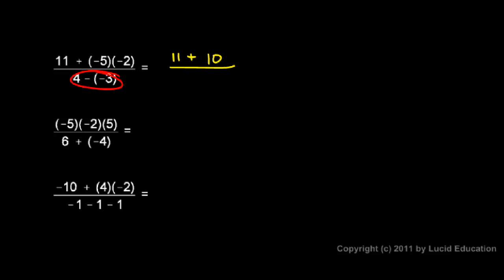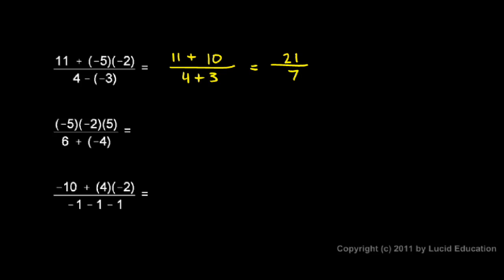In the denominator, 4 minus negative 3 is the same as 4 plus 3. Each step results in a simpler problem than the one before it. Now the numerator is 11 plus 10, which is 21, and the denominator is 4 plus 3, which is 7. So we have 21 divided by 7, which equals 3.